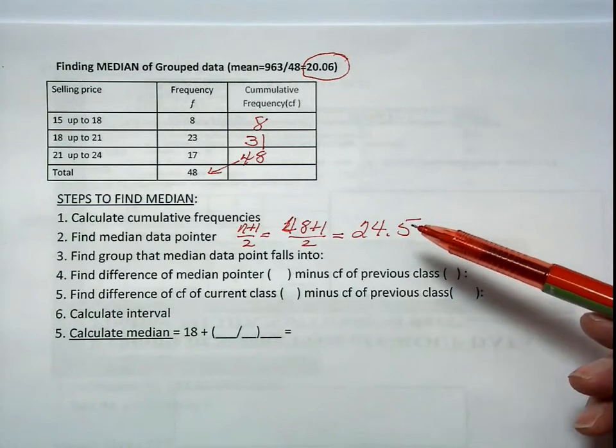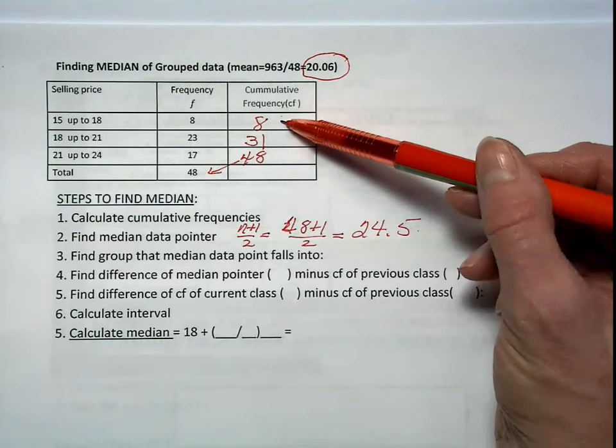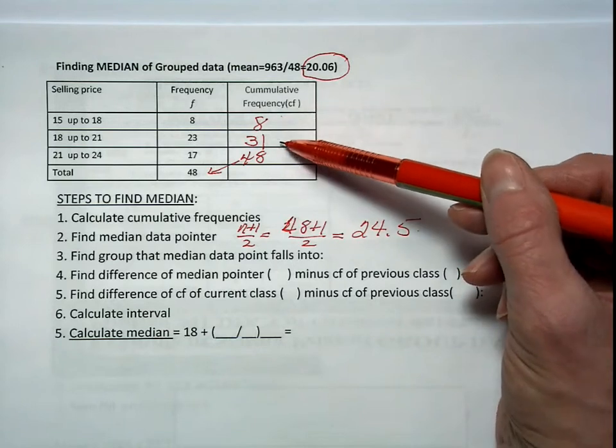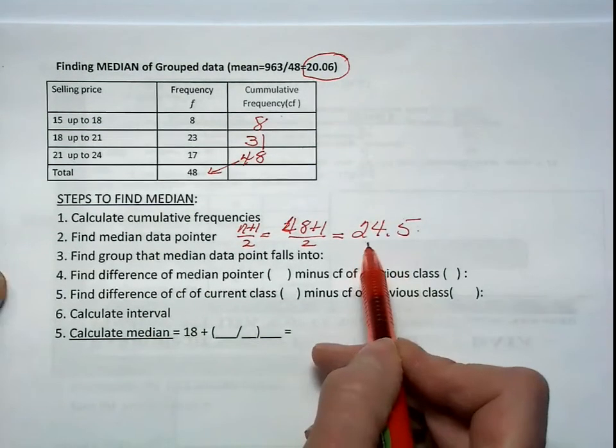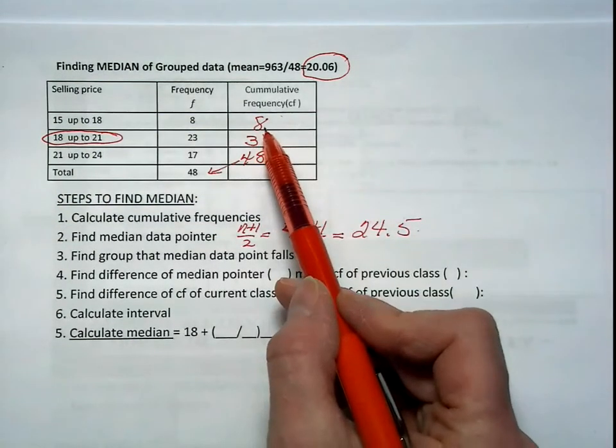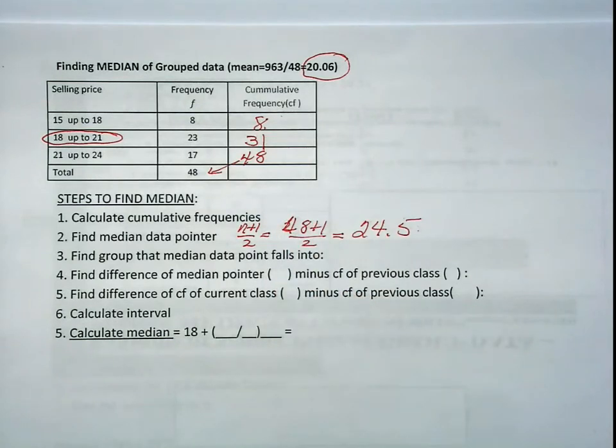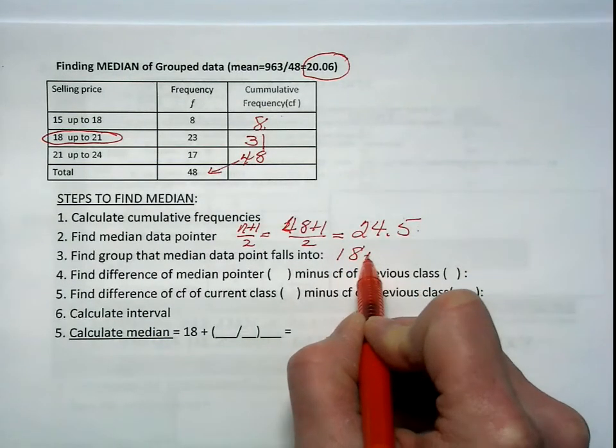Very often people give me on the test this as the median. It's not the median. Our first 8 data points are in this first class. Then, up to our 31st data points are in this class. So our 24.5 data point is going to fall into this class, because it's somewhere between our ninth and our 31st data point. So the group it's going to fall into is 18 to 21.